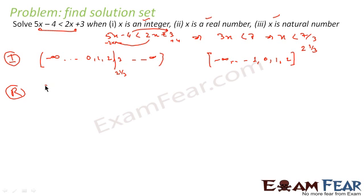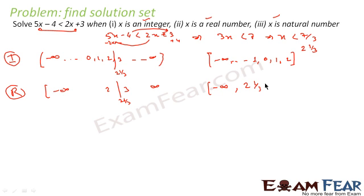When we are talking about real numbers, the solution is the interval from minus infinity to 2 and 1 by 3. Please note here we are using an open bracket at 2⅓ because there is no endpoint — since 2⅓ is not included as the inequality is strictly less than, not less than or equal to. And minus infinity uses an open bracket because infinity is never included.